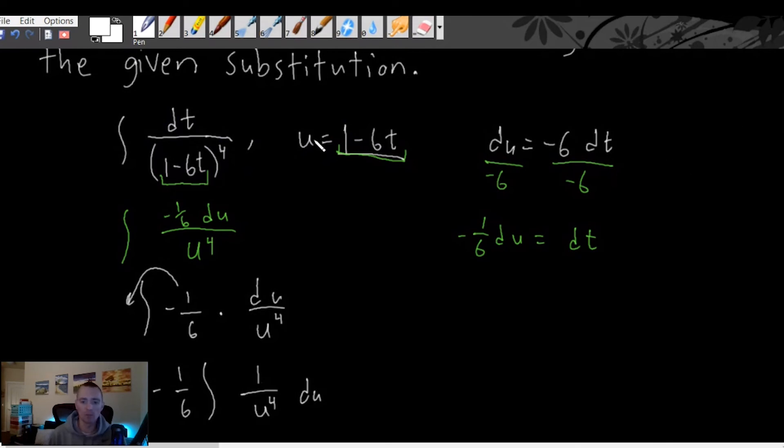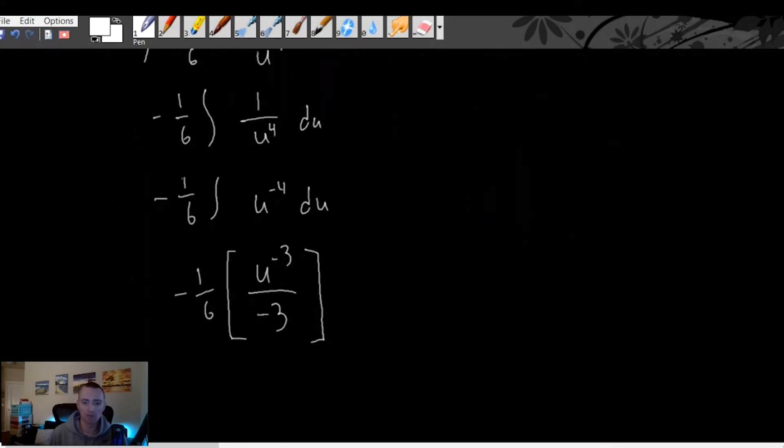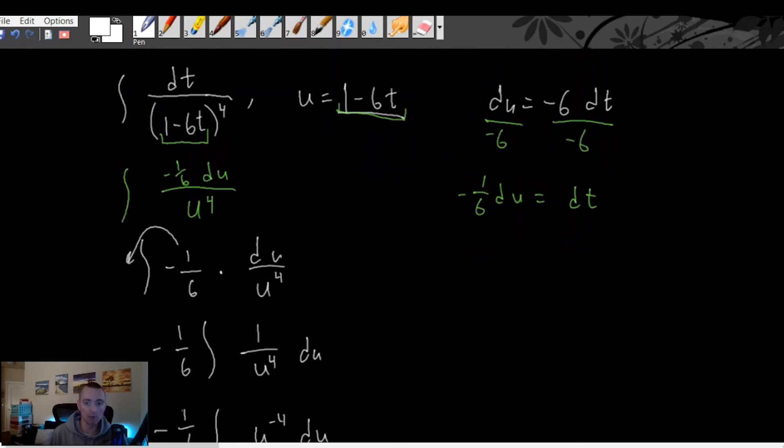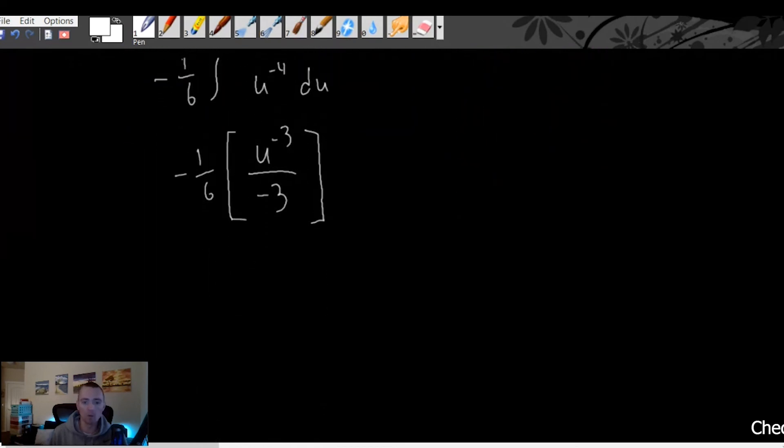So what we want to do now is make this reverse substitution where we're replacing u with one minus six t instead of the other way that we did before. So u is going to be (1 minus 6t) to the negative third power over negative three, and then times negative one six.